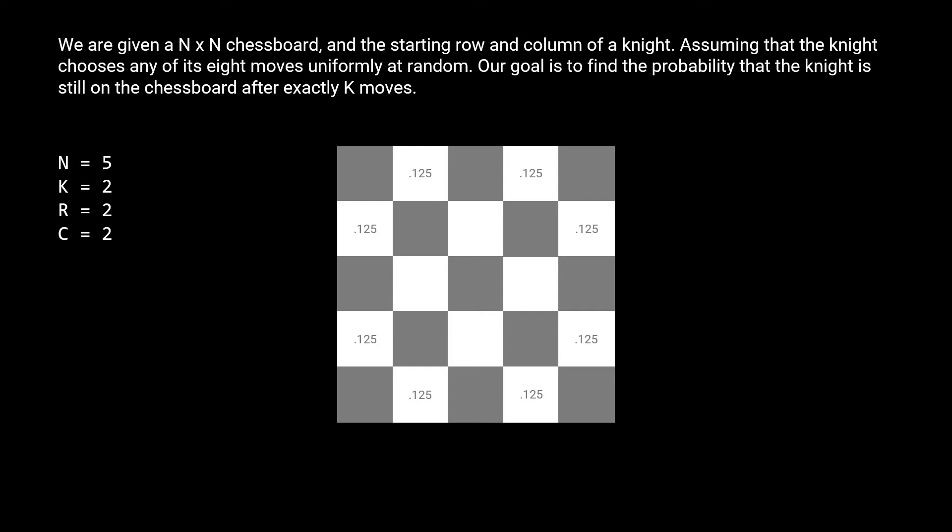If k was 1, we'd return 1.0, because the current probability that the knight is on the chessboard is 100%. So now the knight could be on any one of these eight squares. To simulate a second move, we start on any of these eight squares and try to simulate the eight moves. Let's start with this one here. Of the eight possible moves, only three of them allow the knight to remain on the 5 by 5 grid.